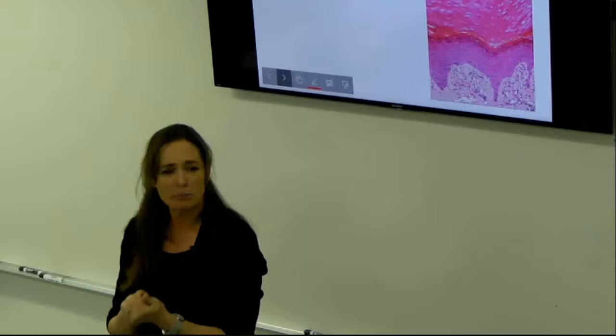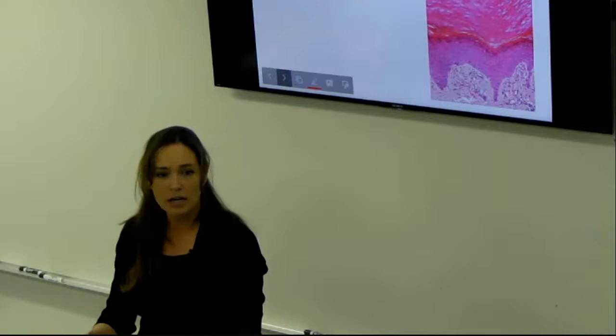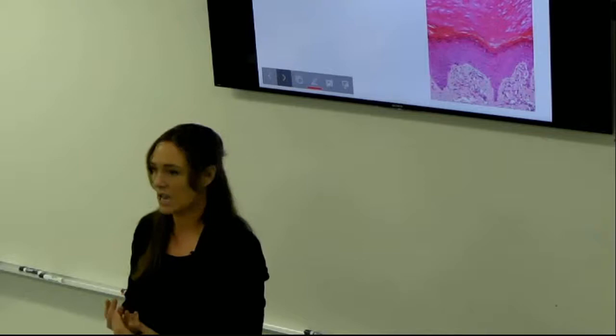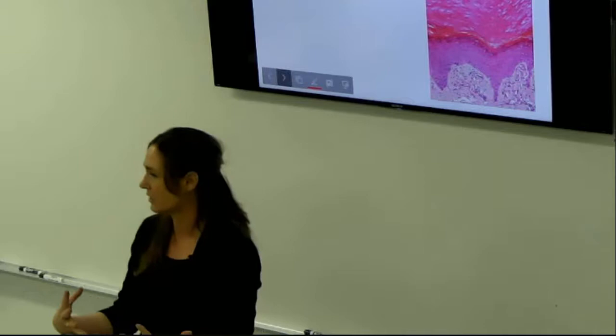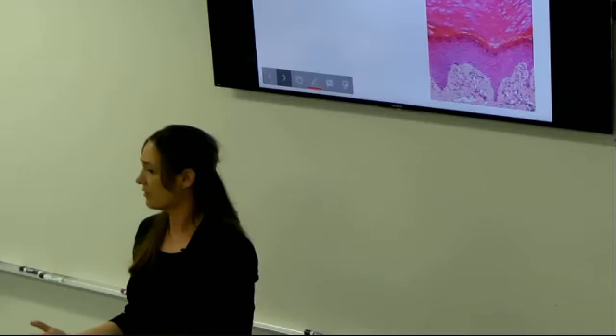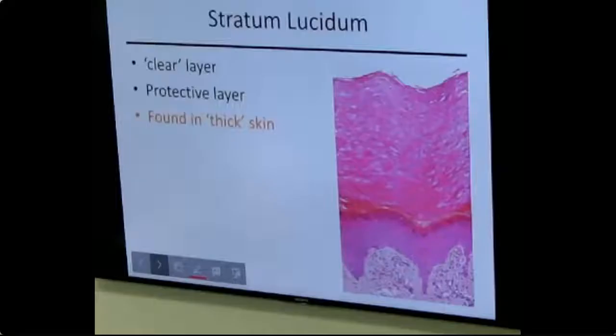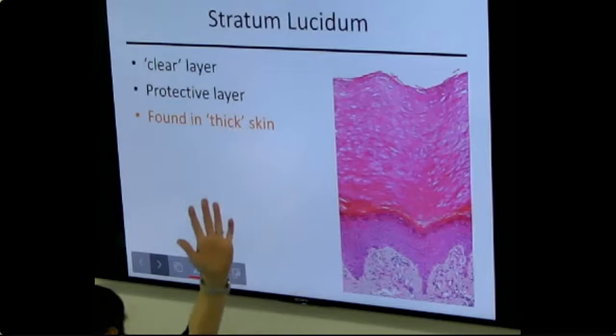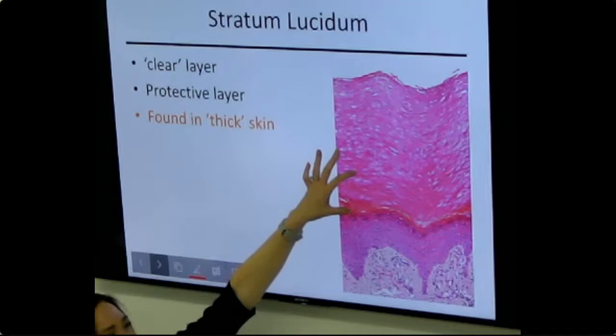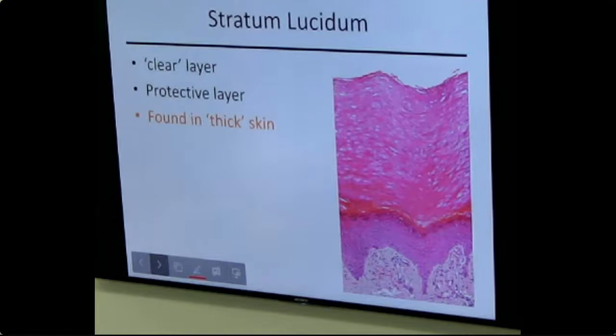This waterproof layer is critical for burn victims — if significant skin is lost, immediate dehydration is the first threat. Long-term survival depends on how much immune barrier has been lost. Stratum lucidum means 'clear layer' and is difficult to spot microscopically. It's found more prominently in thicker skin. Stratum corneum is the outermost layer — the 'horny' layer that constantly flakes off, like dandruff.